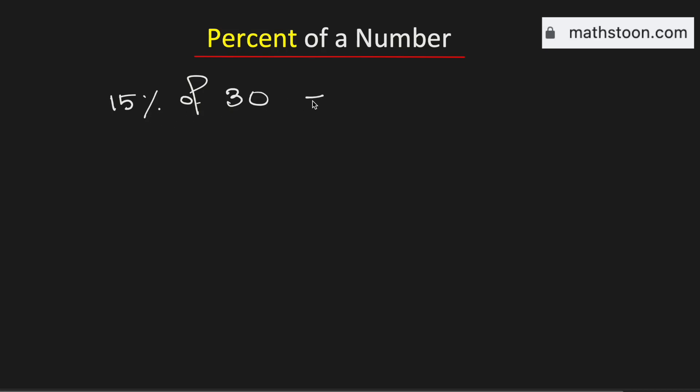To find 15 percent of 30, we need to multiply 30 by 15 percent. We know that 15 percent can be written as 15 over 100, and this 30 can be written as 30 over 1.